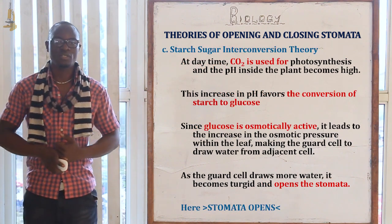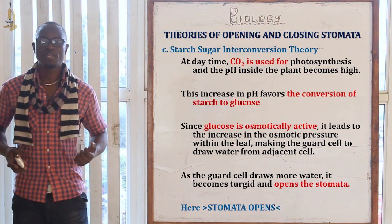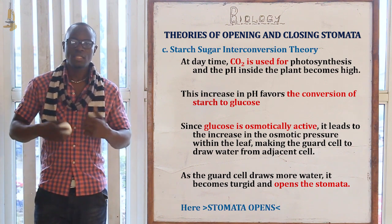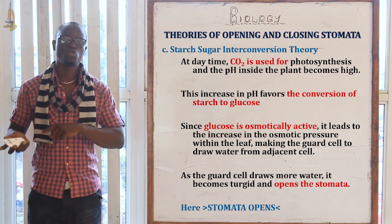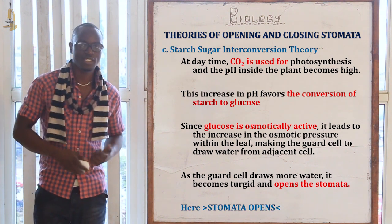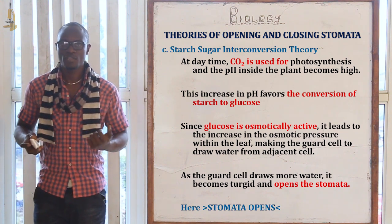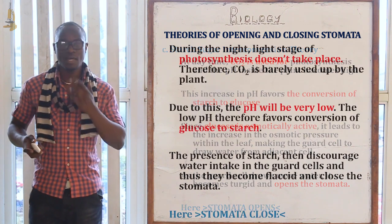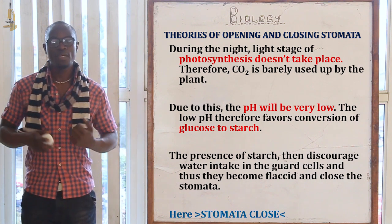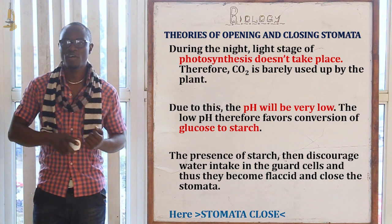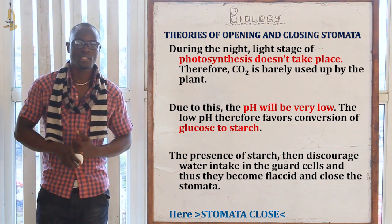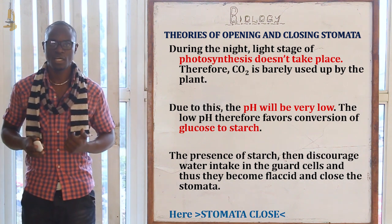In the sugar-starch interconversion theory, during the day carbon dioxide is used for photosynthesis and the pH becomes very high. This high pH favors the conversion of starch to glucose. Since glucose is osmotically active, it increases osmotic pressure, causing guard cells to draw water from adjacent epidermal cells, leading to stomata opening. At night, photosynthesis does not take place and carbon dioxide is not used up, so the pH becomes very low. The low pH favors conversion of glucose back to starch; the presence of starch discourages water intake, the guard cells become flaccid, and the stomata close.